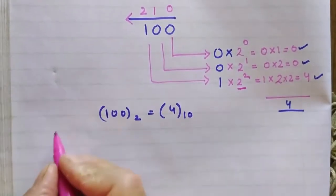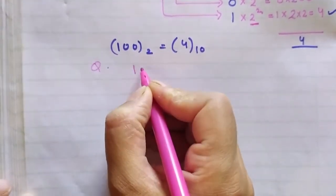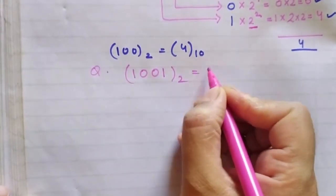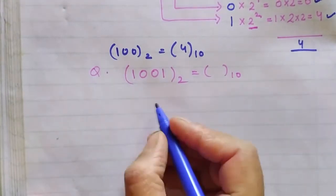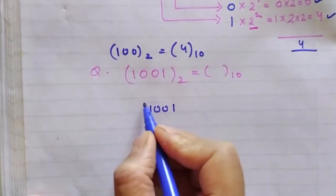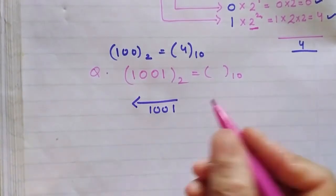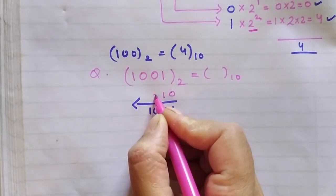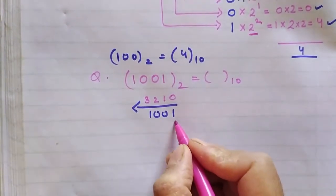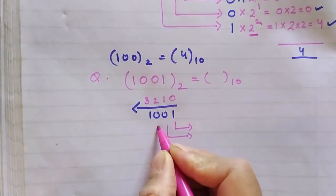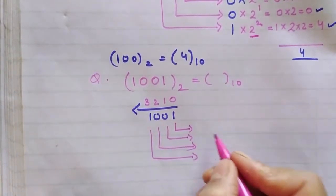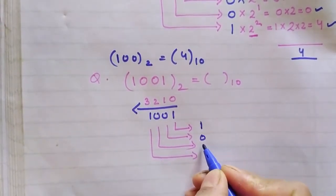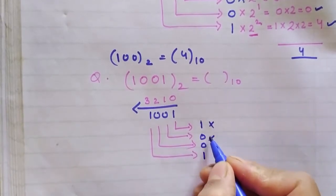Let me explain one more example. My question is suppose 1, 0, 0, 1. I have to obtain the decimal value of this number. Same procedure — I will write the number given in the question, draw an arrow like this. Starting from the rightmost digit, I will write the numbers 0, 1, 2, 3. Now I will draw the arrows for the multiplications, then write the bits: 1, 0, 0, 1. Now multiply operation for all of them.